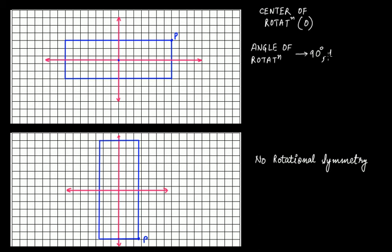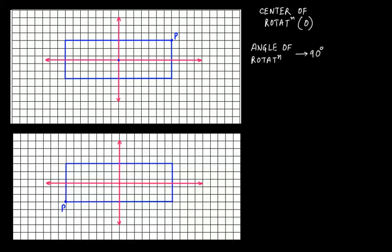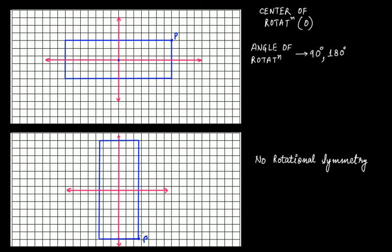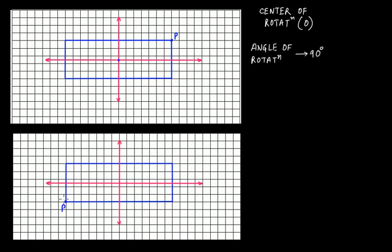So if you move by 180 degrees total from the initial position, this happens. This point P comes to this new position. At an angle of rotation of 180 degrees the figures are exactly the same — yes, there is rotational symmetry. Why? Because the figures are exactly the same.